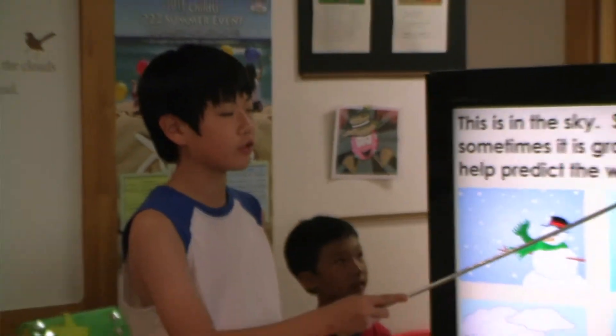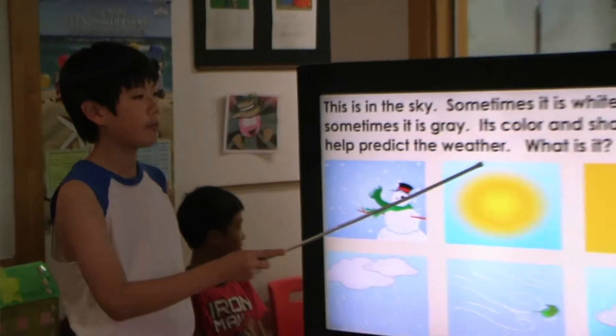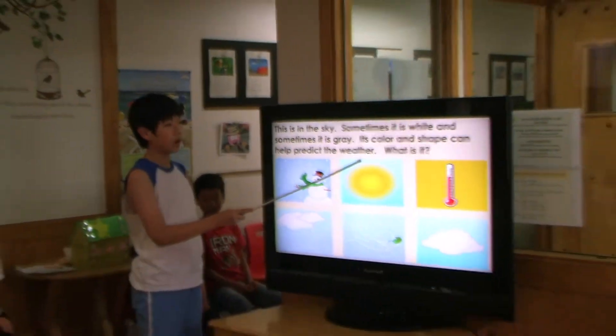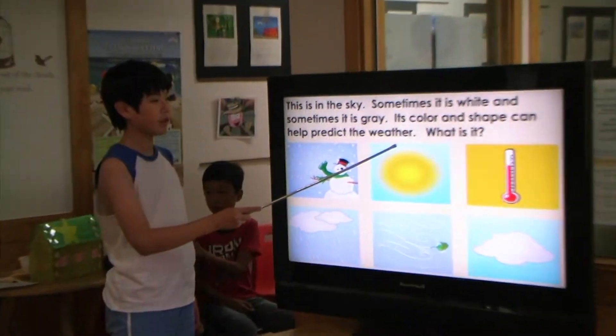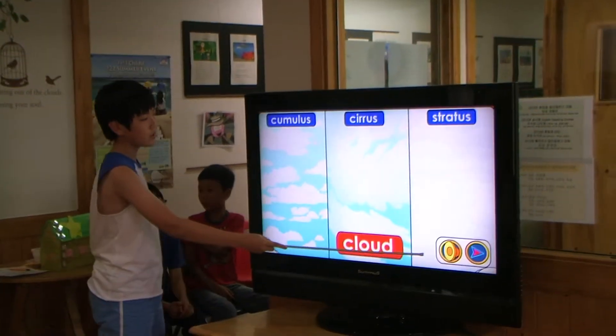It is in the sky. Sometimes it is white and sometimes it is gray. Its color and shape cannot predict the weather. What is it? Clouds!